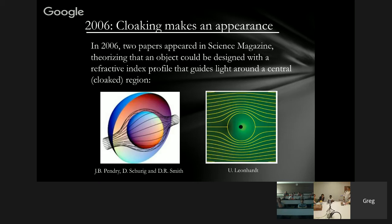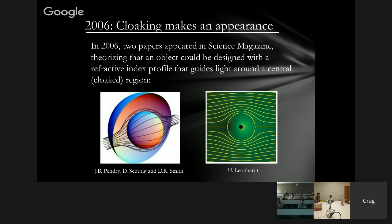However, in 2006 I got a really big surprise, along with a bunch of other people: two theoretical papers appeared in Science Magazine, both suggesting that an object could be designed with a particular refractive index profile that guides light around a central cloaked region. Both images from these competing papers show light rays coming in, entering the cloak, going around a completely hidden central region, and being redirected on their way as if they had not encountered anything at all — so the object would be invisible and hide something within it.